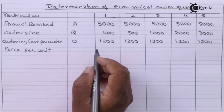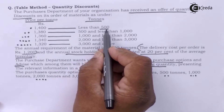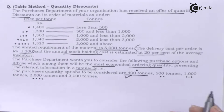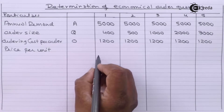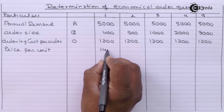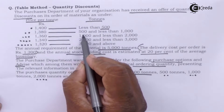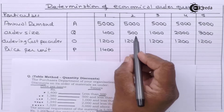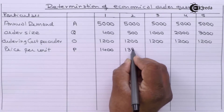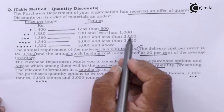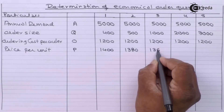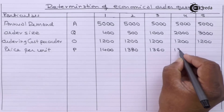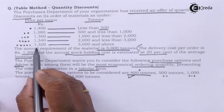Price per unit: if order size is less than 500, it will be 1400 per ton — our first option is 400 tons, so price per unit is 1400. If order size is 500 but less than 1000, it will be 1380. Order size 1000 but less than 2000: 1360. Order size 2000 but less than 3000: 1340. Order size 3000 and above: 1320.